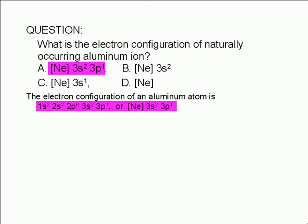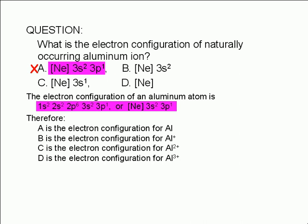Therefore, choice A is not the answer. Choice A is the electron configuration for an aluminum atom.